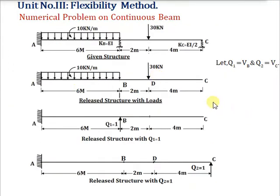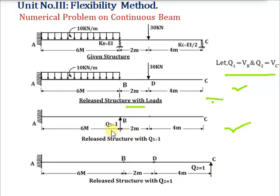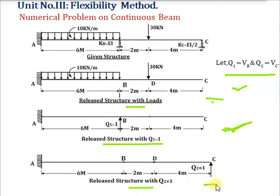Next step: obtain the release structure by removing the redundant forces. This gives a determinate structure with loading. In the second structure, apply unit force in the direction of redundant VB (Q1 = 1) without considering loading. In the third structure, apply unit force in the direction of redundant VC (Q2 = 1) without loading.